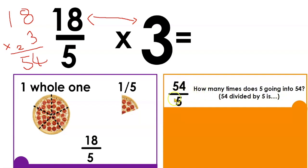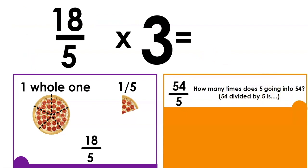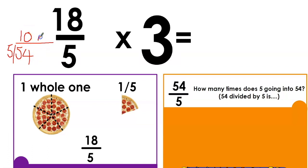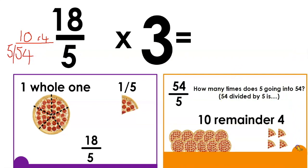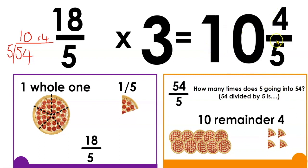We have fifty-four over five and we now have to turn it into a mixed number — whole ones with fractions. How many times does five, the bottom number, go into the top number? Fifty-four divided by five: five goes into five once; five goes into four zero times, remainder four. So it goes in ten times with four left over. We're working in fifths, so it's four fifths left over. The answer is ten and four fifths.